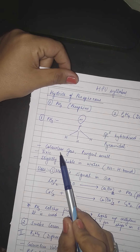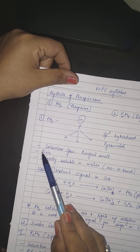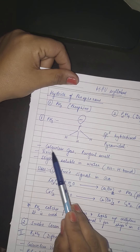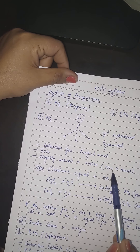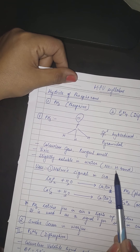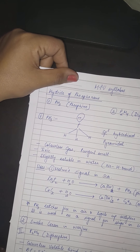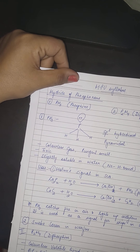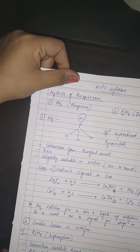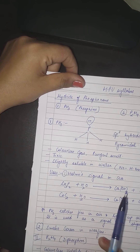Phosphine ek colorless, pungent gas hai jo highly toxic hoti hai. Yeh water mein slightly soluble hai, kyunki jo substances water mein dissolve hote hain woh hydrogen bond form kar sakte hain — lekin PH₃ water ke saath hydrogen bond form nahi kar sakti, isliye yeh bahut kam dissolve hoti hai.